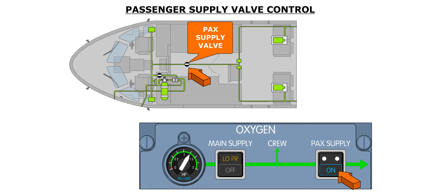The passenger supply valve is controlled by the passenger supply push button, also located on the oxygen panel. When the passenger supply push button is in, the passenger supply valve is opened downstream of the crew supply valve, and the blue on light is illuminated. Releasing the push button closes the passenger supply valve.